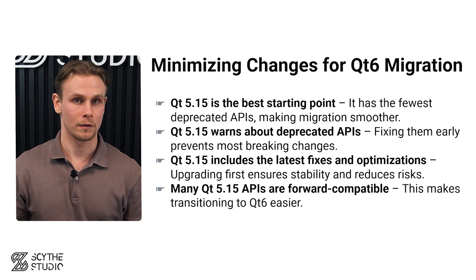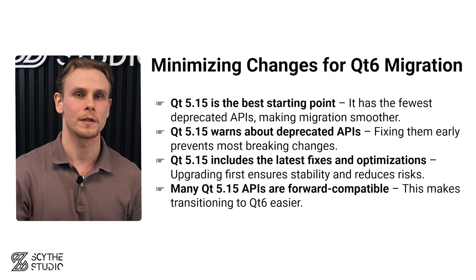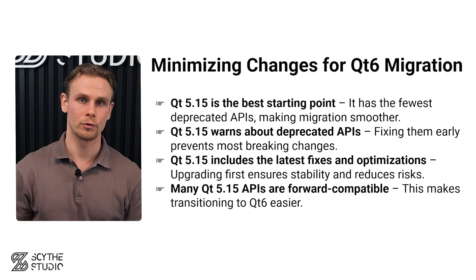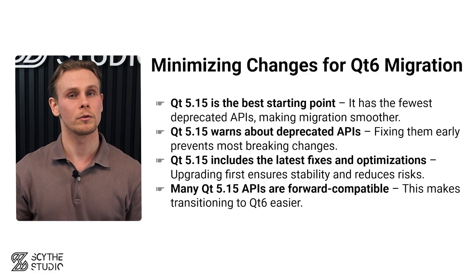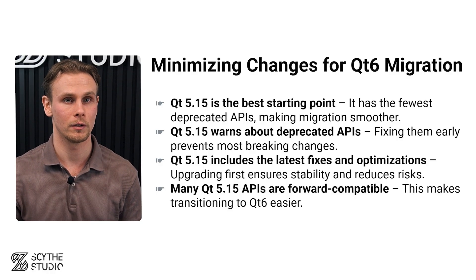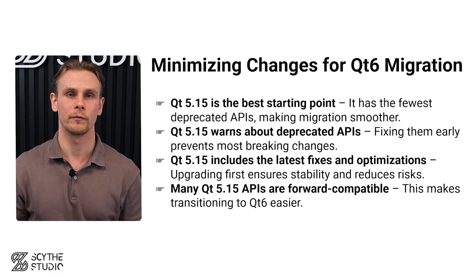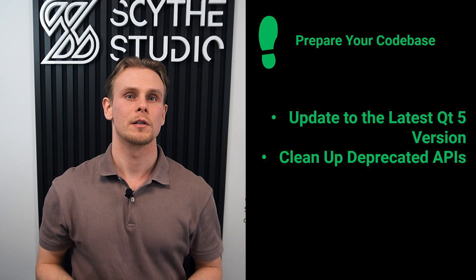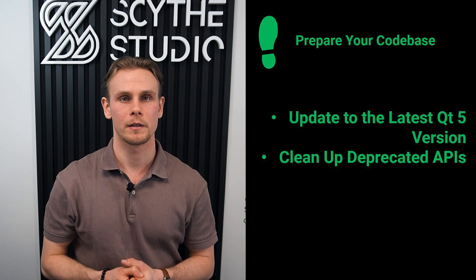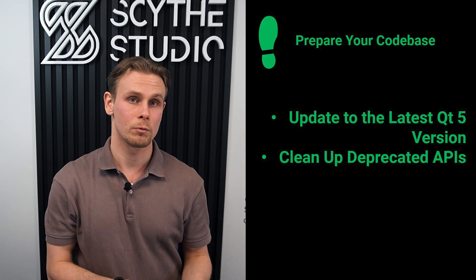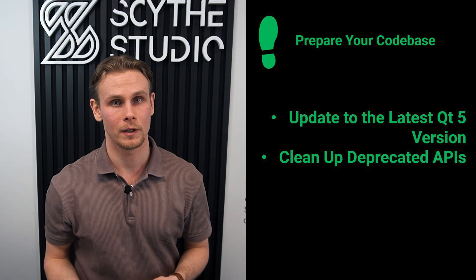Since Qt 5.15 includes the latest features, bug fixes and optimizations from the Qt 5 series, upgrading to it first helps ensure your project is stable and up to date, reducing the risk of unexpected issues. Plus, many APIs in Qt 5.15 were designed to be forward compatible with Qt 6, making your transition even easier. The second step is to remove or replace any usage of APIs that were marked as deprecated in Qt 5, as these may have been removed in Qt 6.